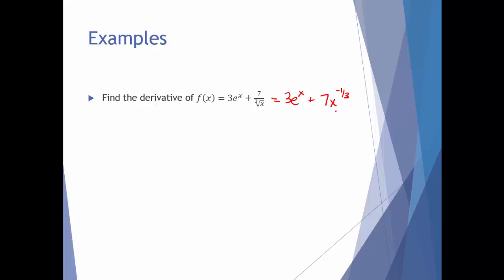The reason I rewrite it in that form is so I can apply the power rule to the second term. The first term is an exponential — the second term is a radical, but because the variable is in the base, we apply power rule. Taking the derivative: the first term gives 3e to the x — the constant stays out front and the derivative of e to the x is e to the x. For the second term, power rule gives negative one-third times 7, so negative seven-thirds, times x to the negative four-thirds.